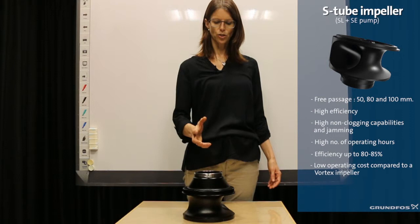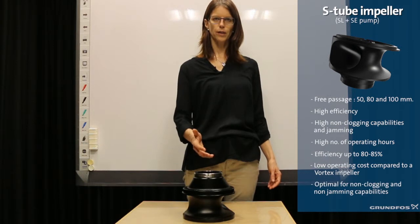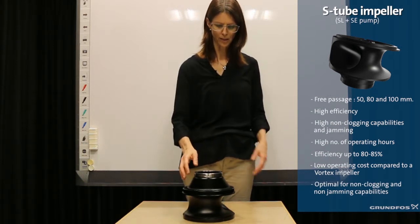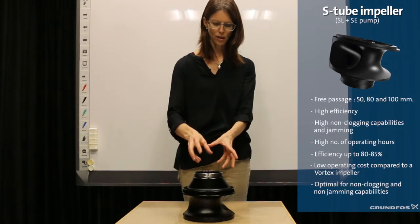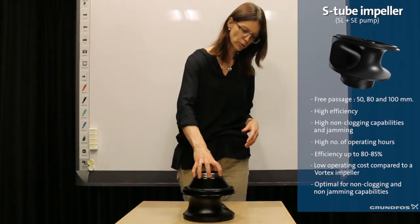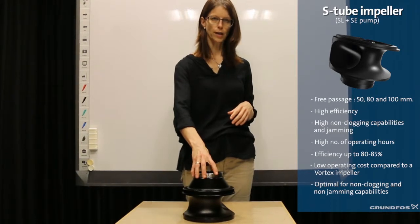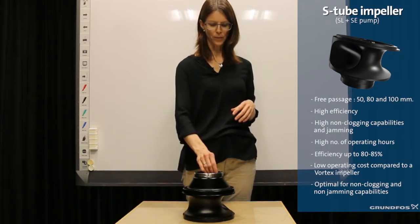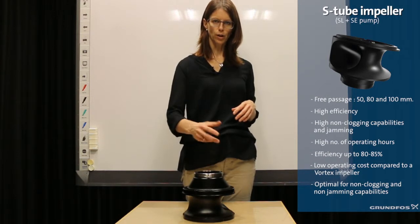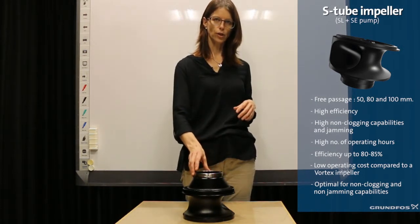The tube impeller cannot handle as much dry solids as the vortex impeller, though. This design is optimal for non-clogging and non-jamming capabilities. It not only has a very good free passage design, but also a spin-out groove between the pump housing and the impeller which reduces recirculation of the wastewater. Wastewater trying to run back is led into the inlet, and solids are cut into smaller pieces.